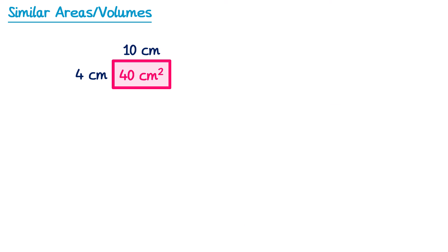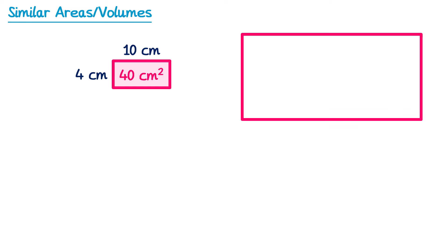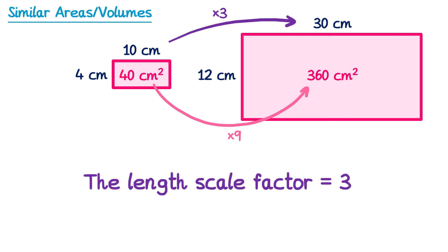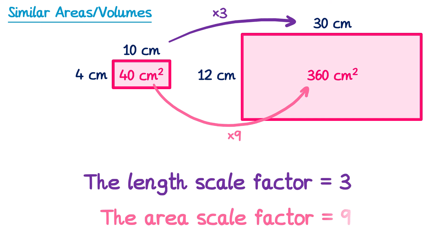Now let's have a look at what would happen if we enlarge by scale factor 3 — so we make the shape 3 times as big. We do 10x3 which is 30, and 4x3 which is 12. If we now do the area of the larger rectangle, 30x12 is 360. So this time we have the length being multiplied by 3, but the area has been multiplied by 9, since 9 times 40 is 360. So the length scale factor is 3, but the area scale factor is 9.